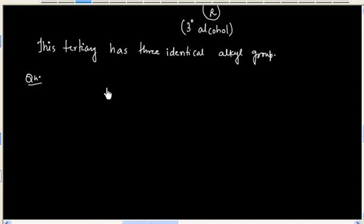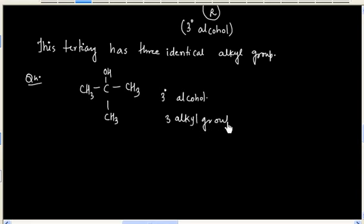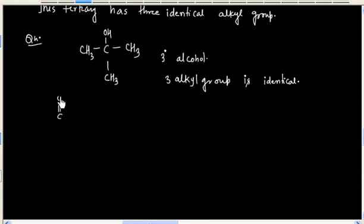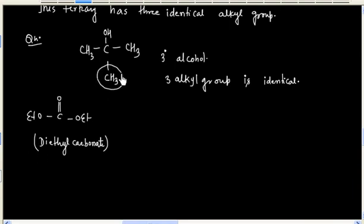Now if I say, how will you prepare this alcohol? So you see this is a tertiary alcohol and 3 alkyl groups are identical. So we can use diethyl carbonate, and this is only coming from Grignard reagent. So we can take CH3MgBr as the Grignard reagent.